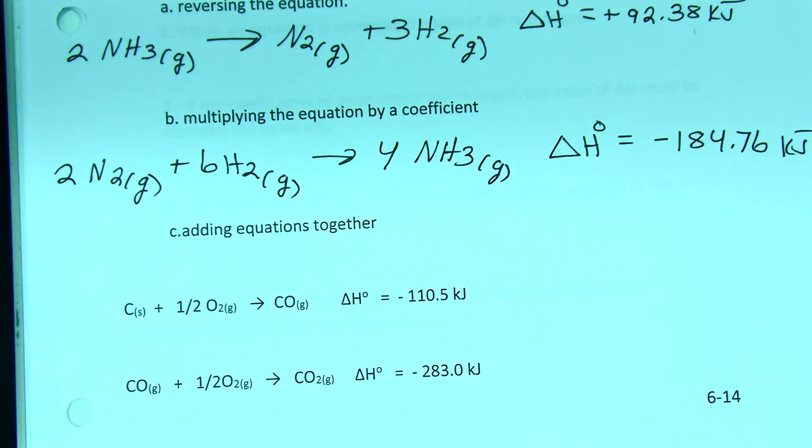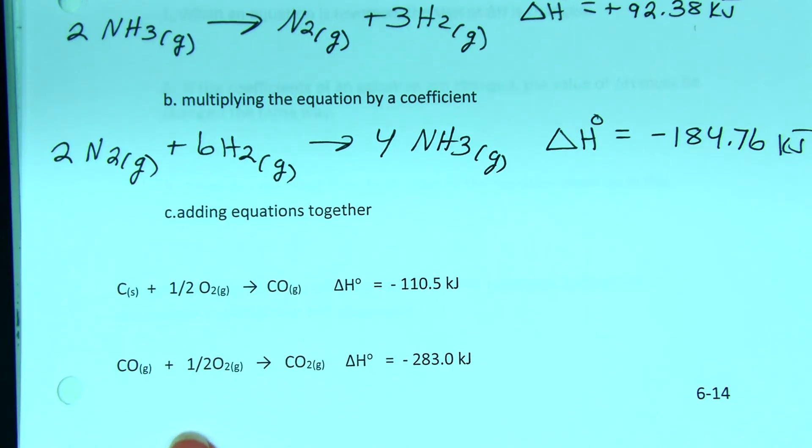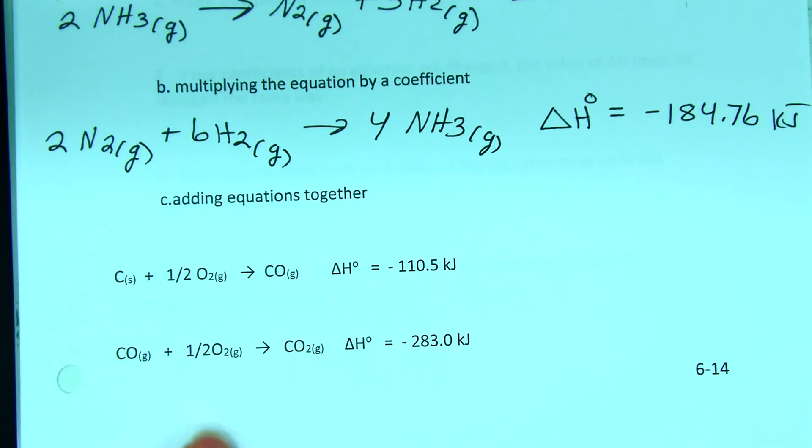And the last thing we can do is manipulate these thermochemical equations by adding them together. We already introduced this idea with half reactions that we could add together all the reactants, all the products. We're going to add together the reactants and the products, and then we add together the enthalpies.